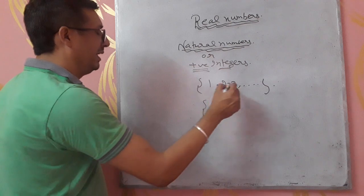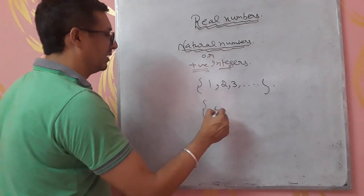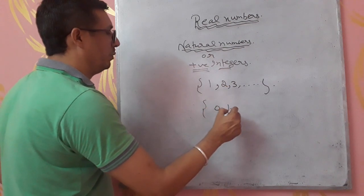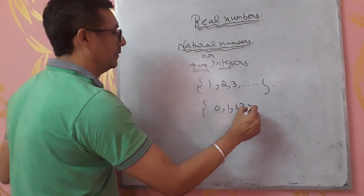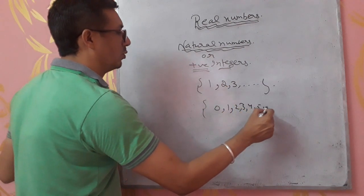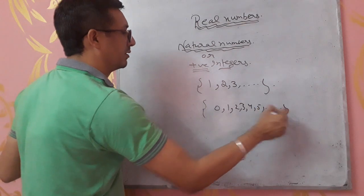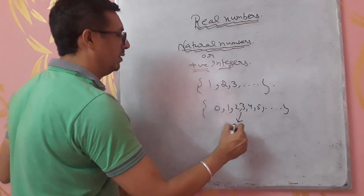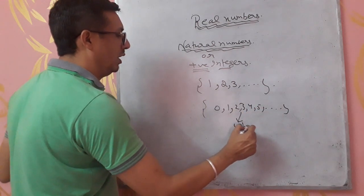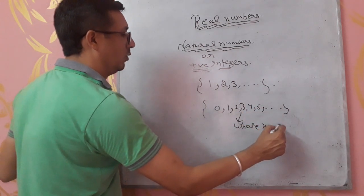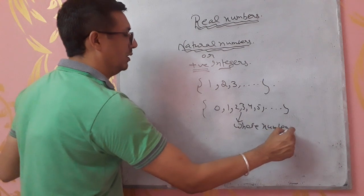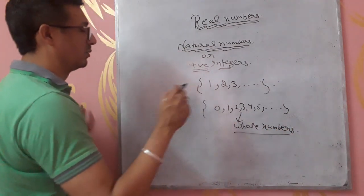If we include these natural numbers together with zero, then these numbers become whole numbers. I hope you understand whole numbers.